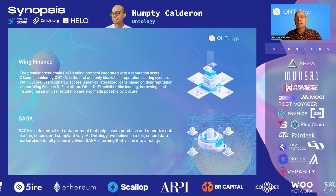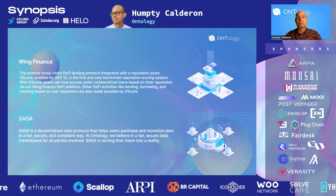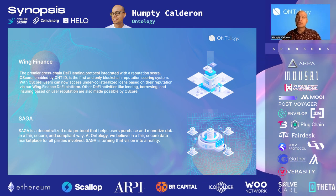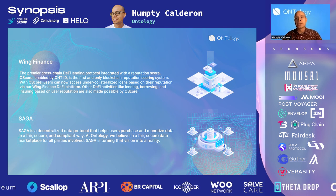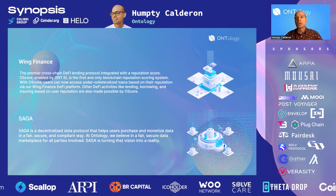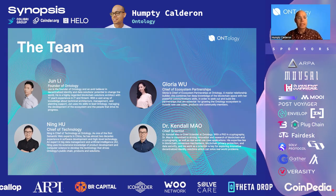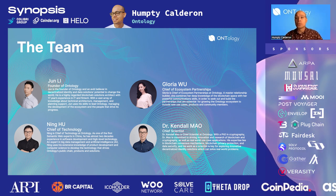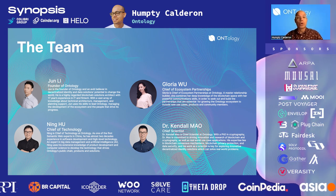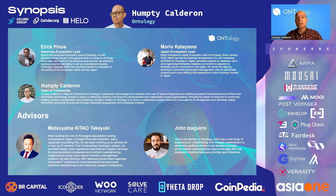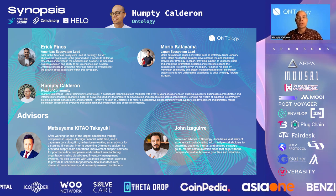And lastly, Ontology built Saga, which is a decentralized data protocol that seeks to help users purchase and monetize data in a fair, secure, and compliant way. Our team is a global team, as is Web3, and we're all working towards the mission of Ontology, which is to build decentralized identity and data solutions.